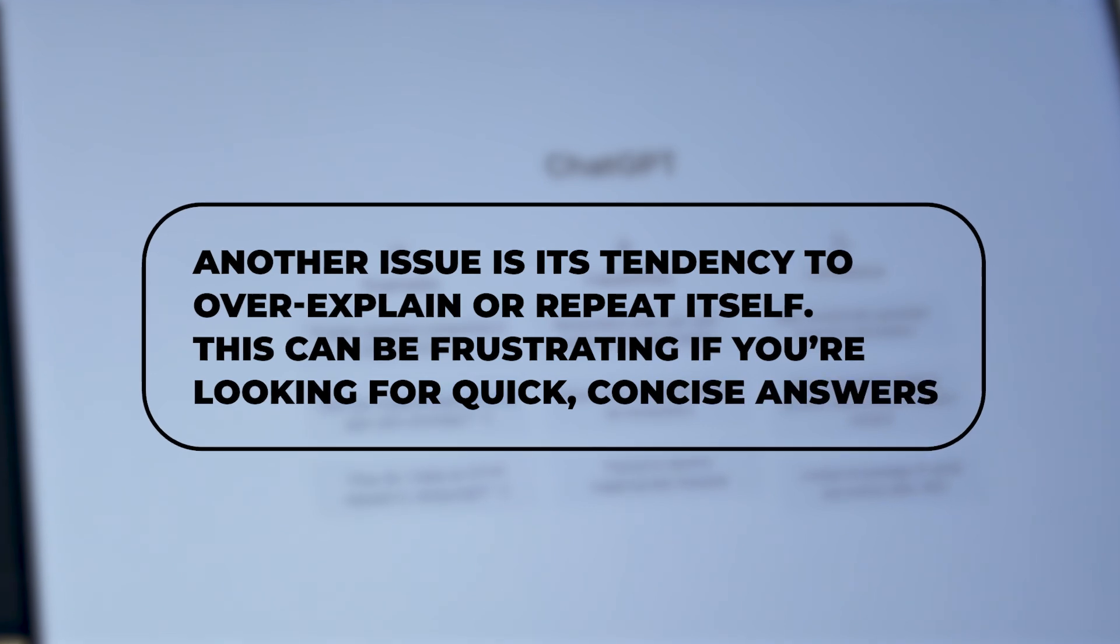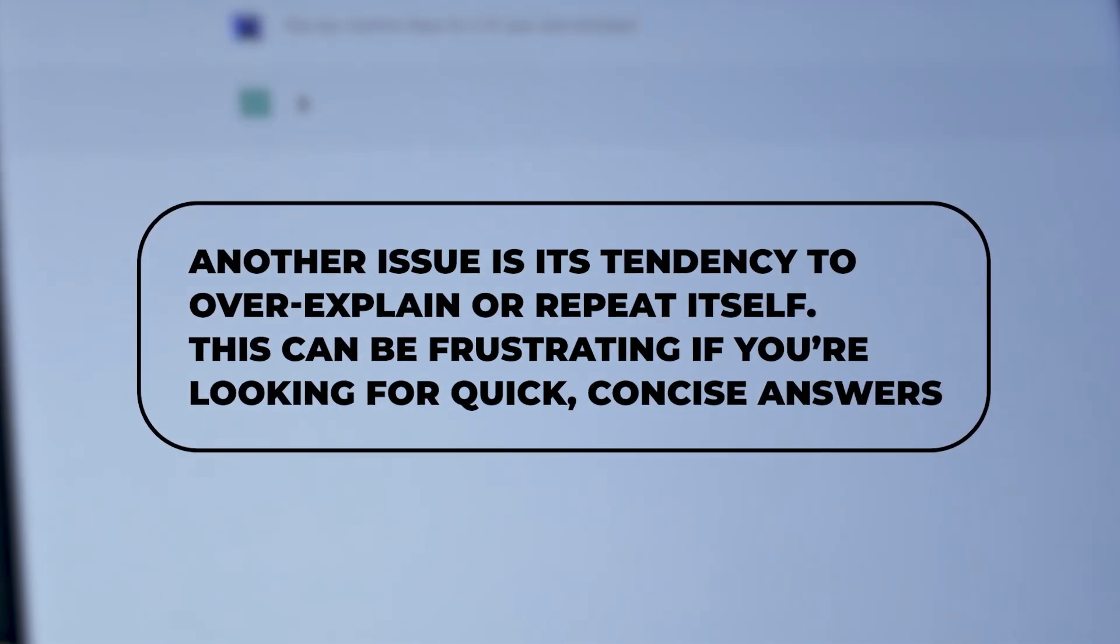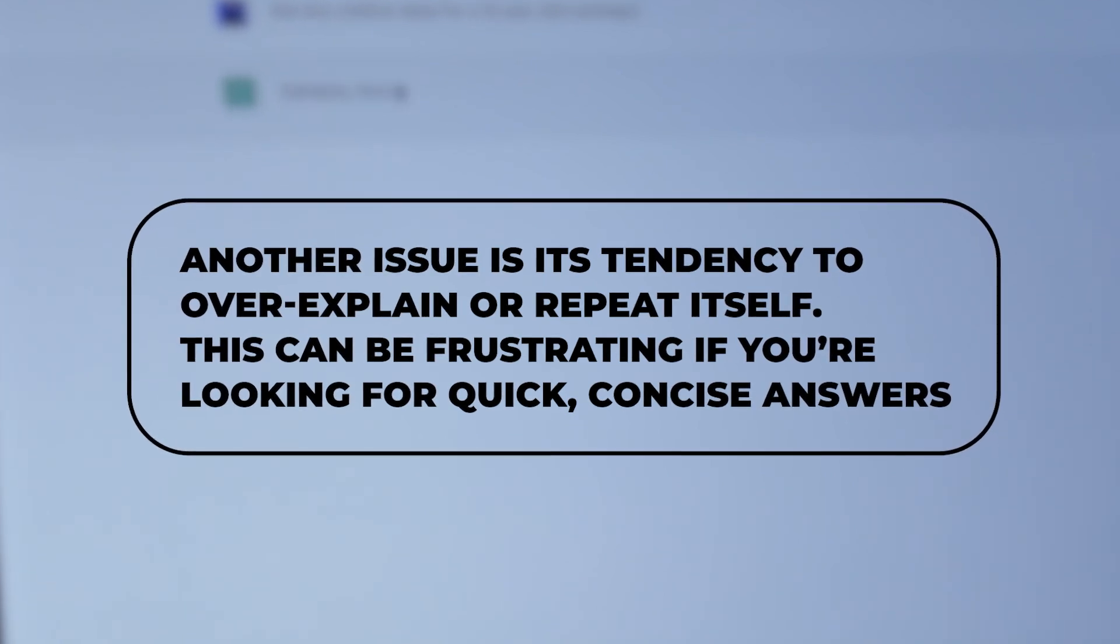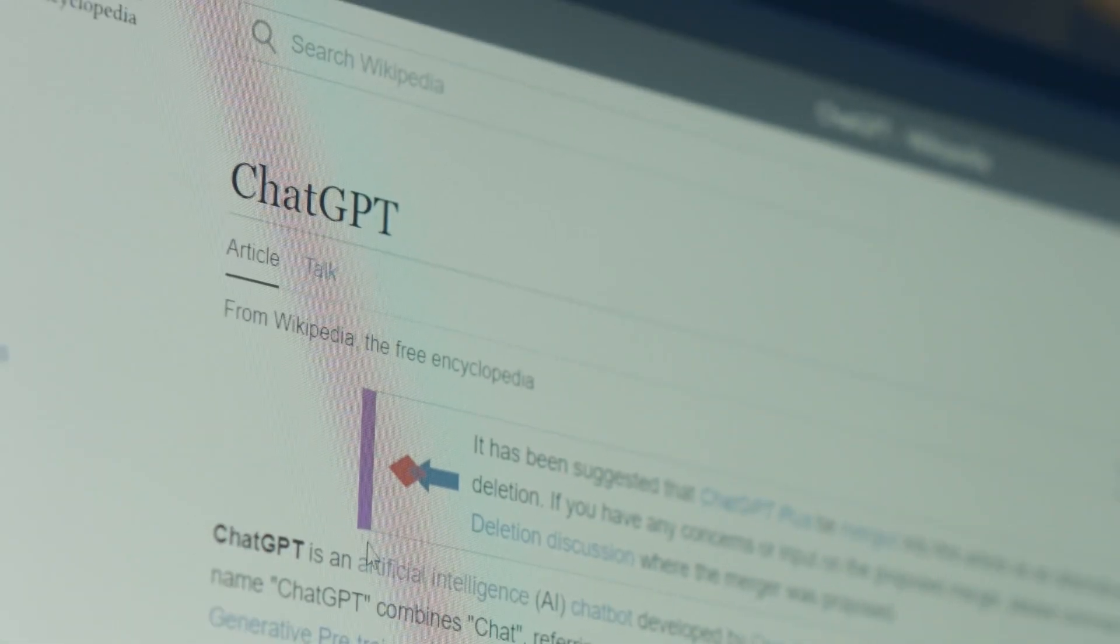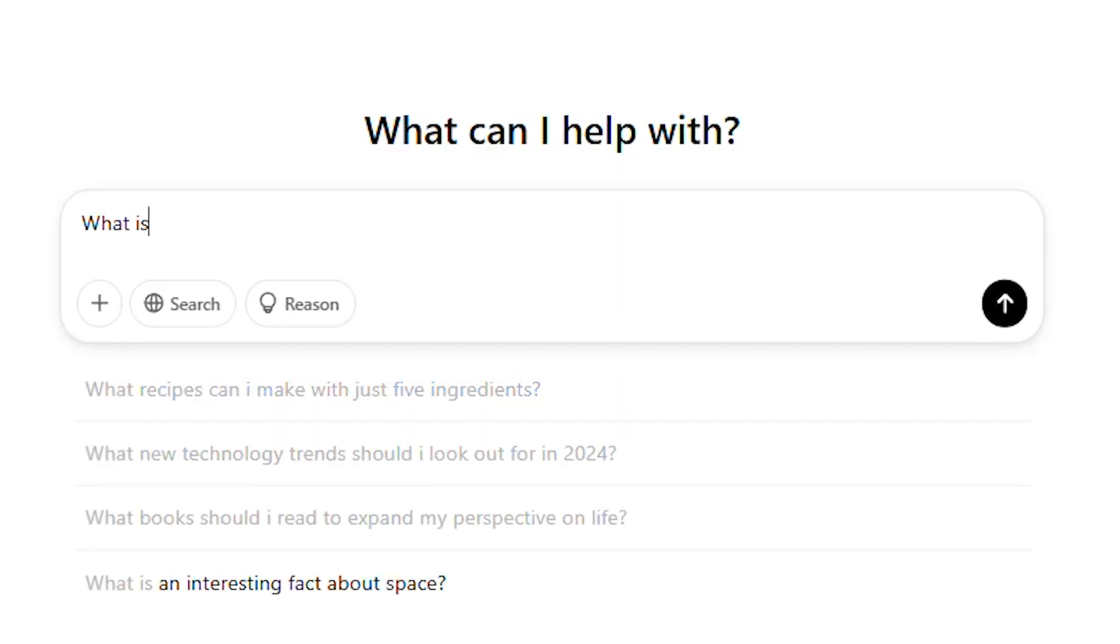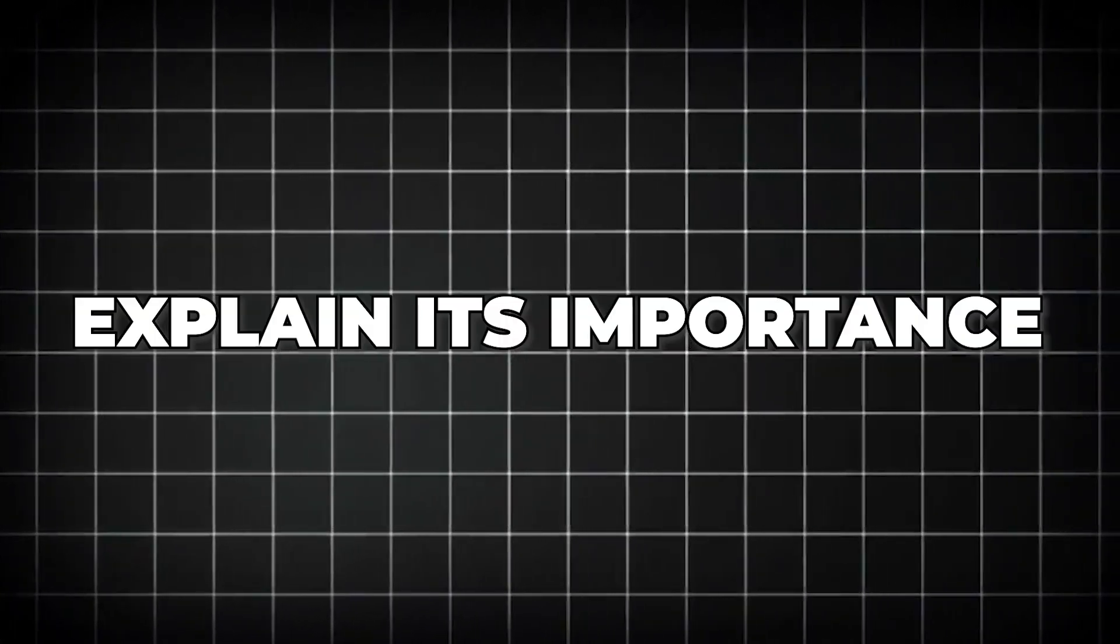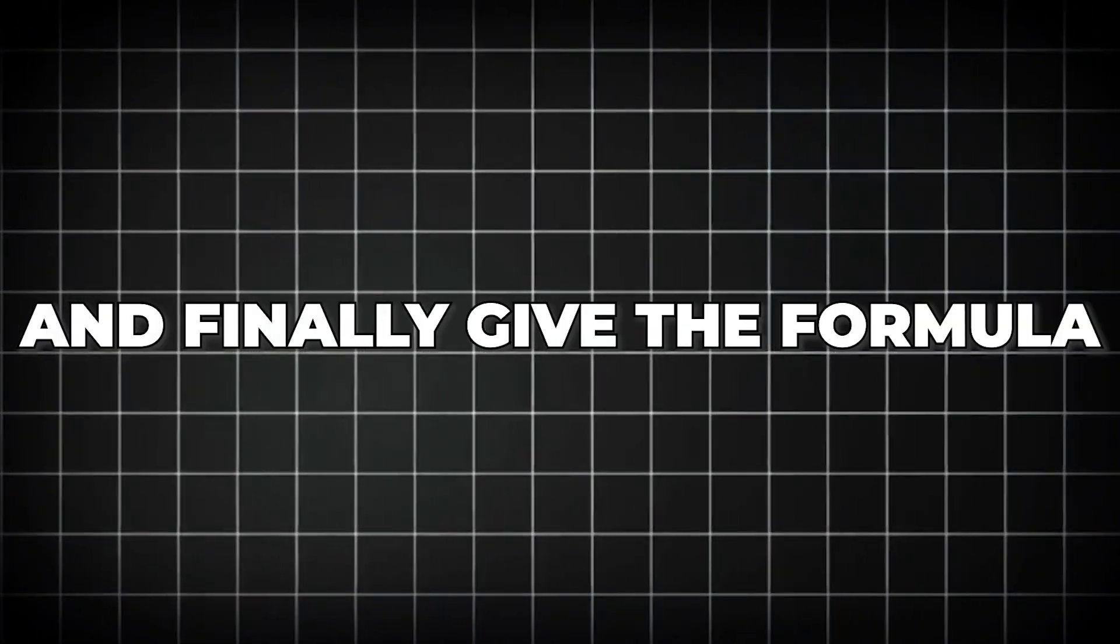Another issue is its tendency to over-explain or repeat itself. This can be frustrating if you're looking for quick, concise answers. For instance, suppose you ask ChatGPT, "What is the formula for compound interest?" Instead of just providing the answer upfront, it might first define compound interest, explain its importance, and then finally give the formula.